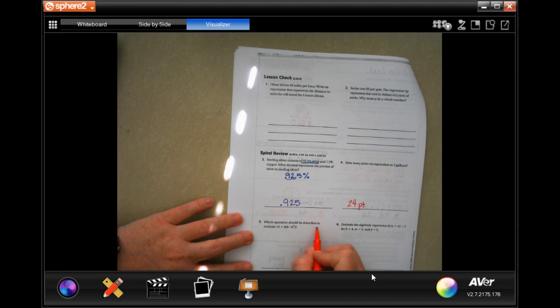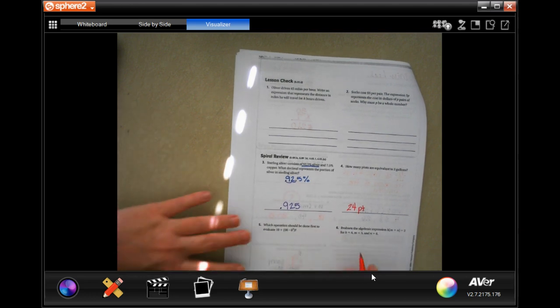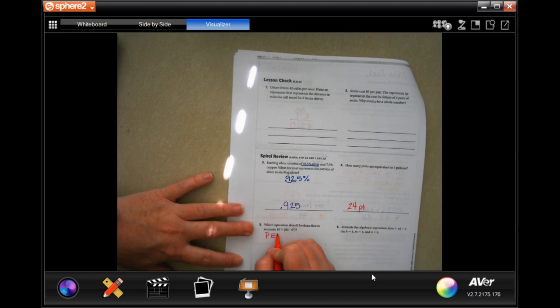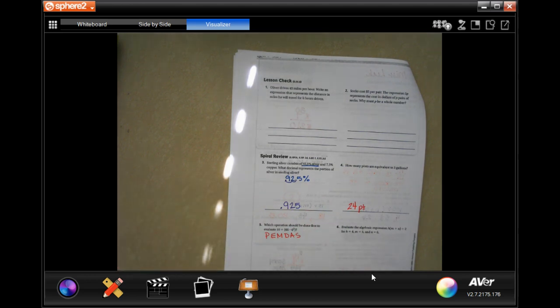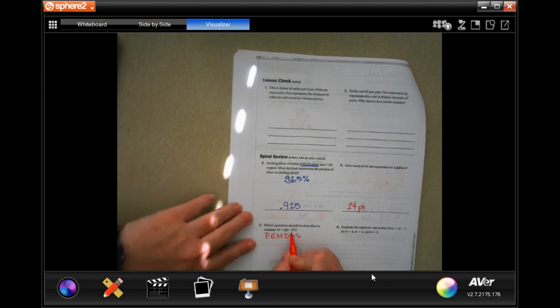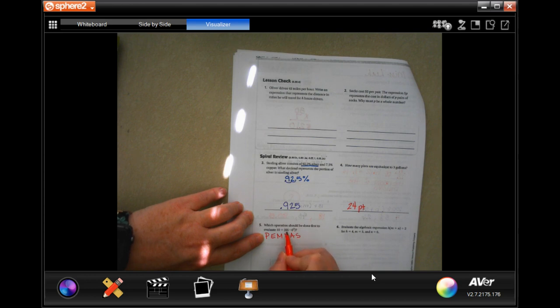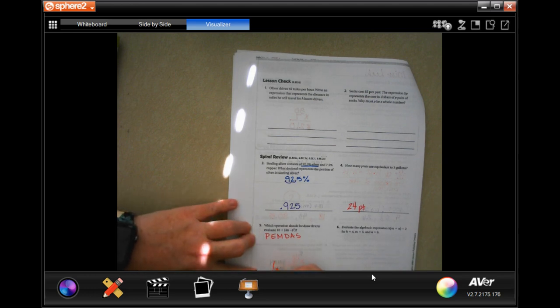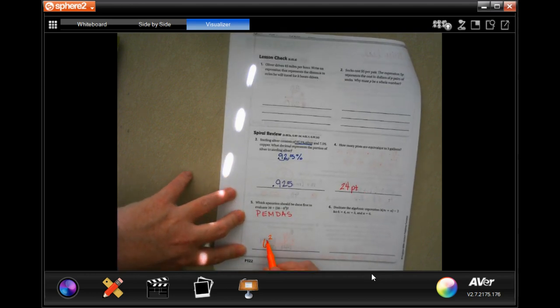What operation should be done first to evaluate 10 plus parentheses, 66 minus 6 squared, end parentheses? So, we're doing PEMDAS, right? So, in order to know which one's going to come first, well, we have to do the parentheses first. But within the parentheses, there's an exponent. I can't do 66 minus 6 squared. I have to know what 6 squared is. So, the operation I need to do first is going to be 6 squared. That's the exponent inside of the parentheses.